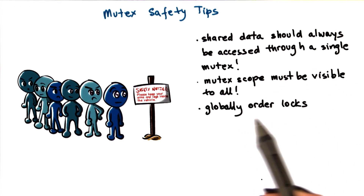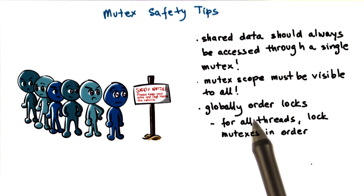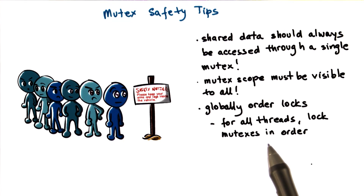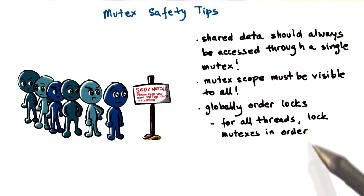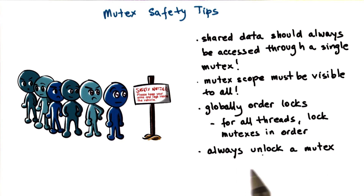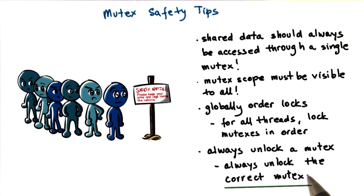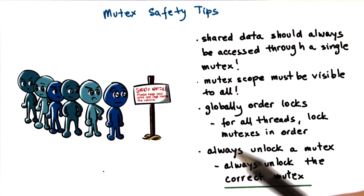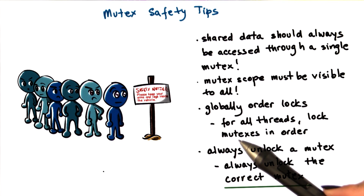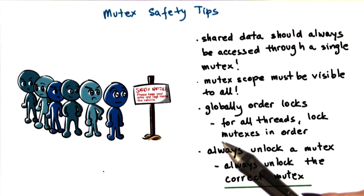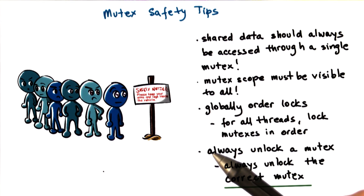Another important tip is to globally order the locks. Once we establish an order between the mutexes in the pthreads program, all threads must lock the mutexes in that particular order — this is a way to ensure that deadlocks don't happen. Finally, remember to always unlock a mutex, and make sure you always unlock the correct mutex. Given that pthreads has separate lock and unlock operations, it can be easy to forget the unlock, and compilers will not necessarily tell you there is a problem. So you have to make sure you keep track of your locks and unlocks.